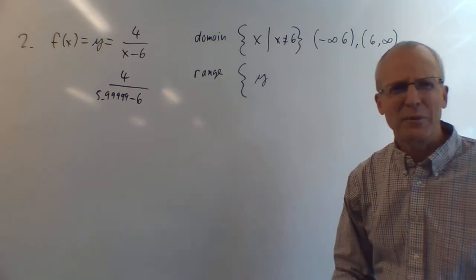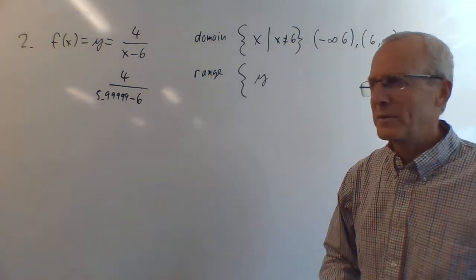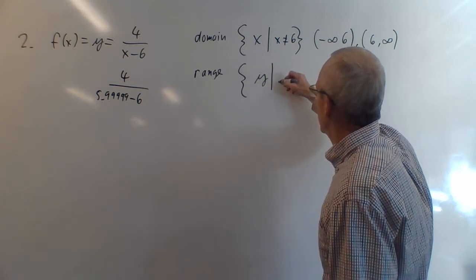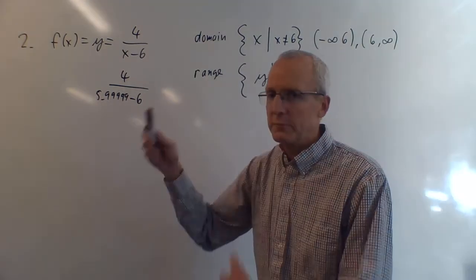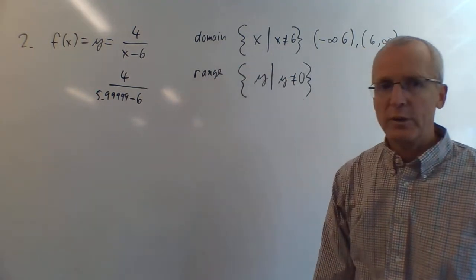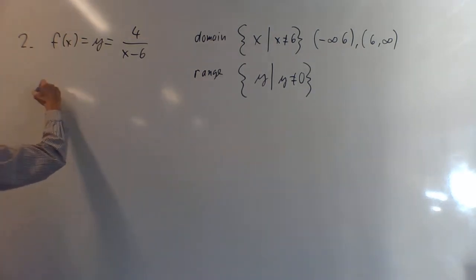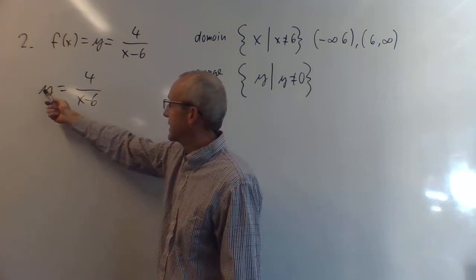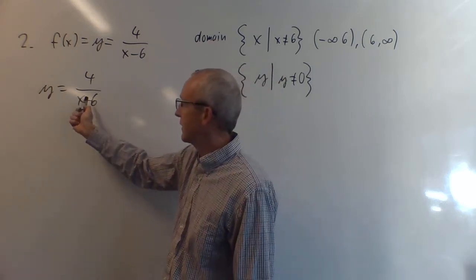The range uses y values, not x — make sure to label it correctly. For the inverse: because we have a simple fraction with one term on top and one on the bottom, we can just swap them. From y = 4/(x-6), we get x - 6 = 4/y, so x = 4/y + 6. Switching to x: f⁻¹(x) = 4/x + 6.